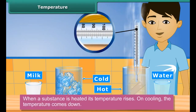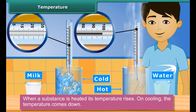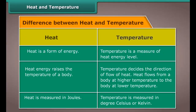When a substance is heated, its temperature rises; on cooling, the temperature comes down. The degree of hotness or coldness in a body is described as its temperature. The table shows the difference between heat and temperature: heat is a form of energy, while temperature is a measure of heat energy level. Heat energy raises the temperature of a body, while temperature decides the direction of flow of heat. Heat flows from a body at higher temperature to the body at lower temperature. Heat is measured in joules; temperature is measured in degrees Celsius or Kelvin.